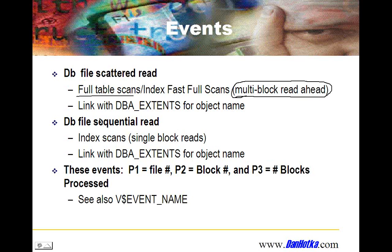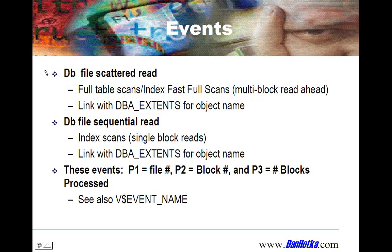You can look up DBA extents, get the object name, and I'll show you how to look up some of these things. I'm also in the process of updating my JS tuner tool, which will show you these wait events and the SQL statements contributing to them — the current running SQL that's causing problems on your system. So DB file scattered read is full table scans or multi-block read ahead type reads.